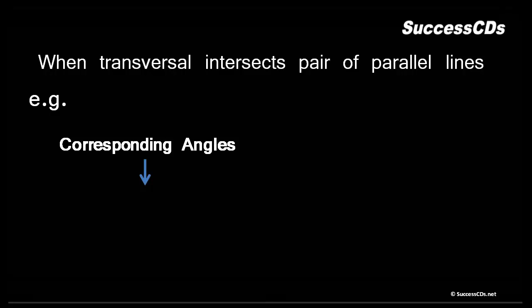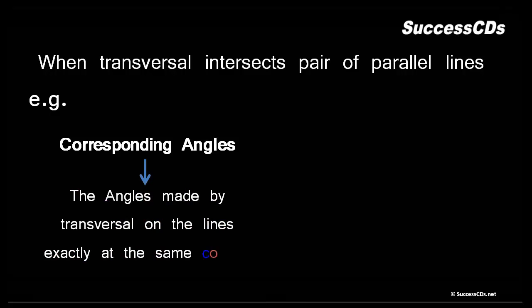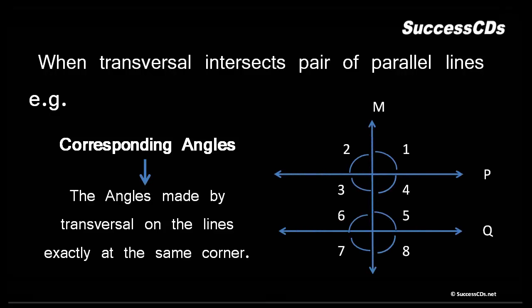Corresponding angles are the angles made by the transversal on the lines exactly at the same corner. Line M is the transversal to lines P and Q, which are parallel. Angle 1 is at the right topmost corner for line P, and angle 5 is at the right topmost corner for line Q. Therefore angle 1 and angle 5 are corresponding angles.